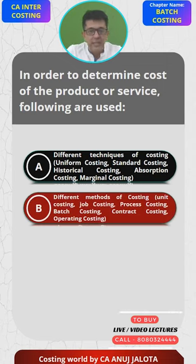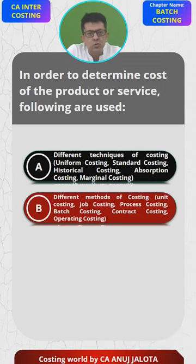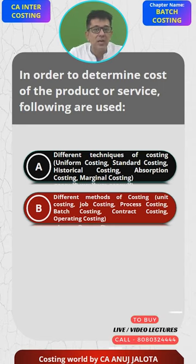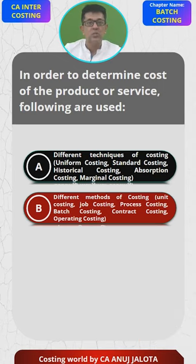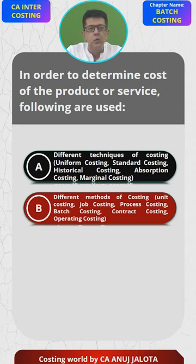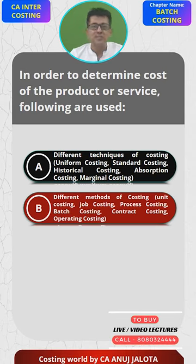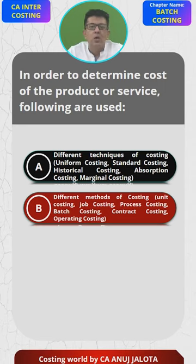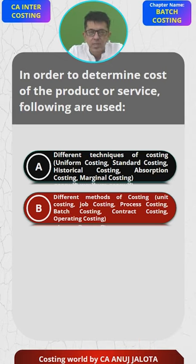Part B: different methods of costing — like unit costing, job costing, process costing, batch costing, contract costing, and operating costing. These are the different ways or techniques available to different types of companies. For example, unit costing is followed by a company that manufactures one type of product. Job costing is used by companies where every unit is different — the customer gives you an order and no two orders are the same. Process costing is where goods pass through various stages before becoming the finished product. Batch costing I have already explained. Contract costing is for the construction business, and operating costing is for the service sector.